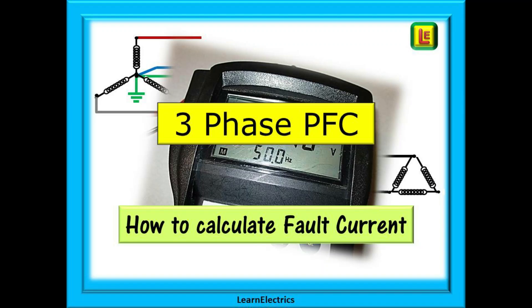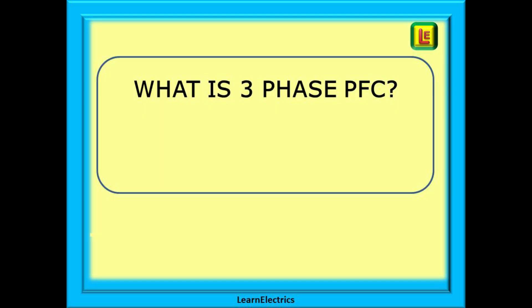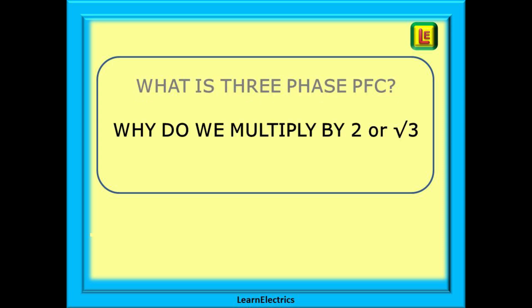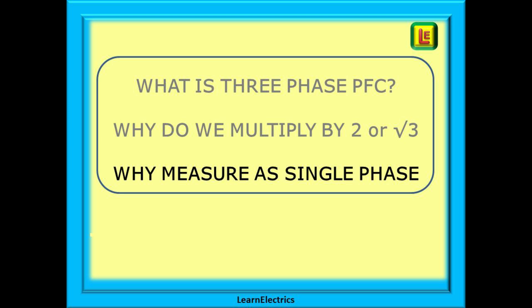Welcome to this video from Learn Electrics. We've often been asked why do we calculate prospective fault current in three-phase systems the way that we do? A question might be just what is three-phase PFC, or why do we multiply some numbers by two and other numbers by the square root of three, and if it is three-phase then why do we measure single phase?